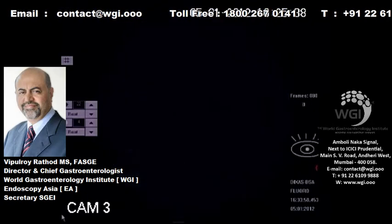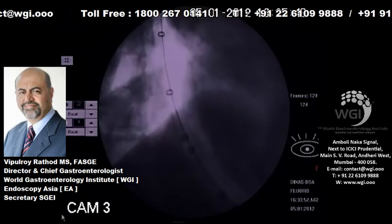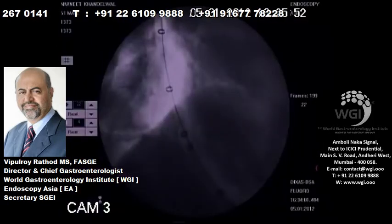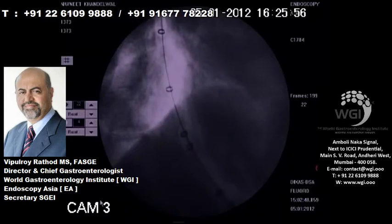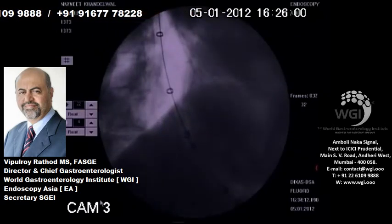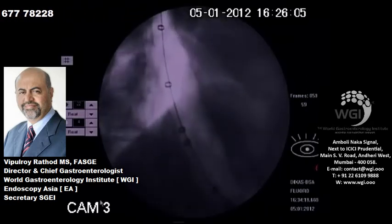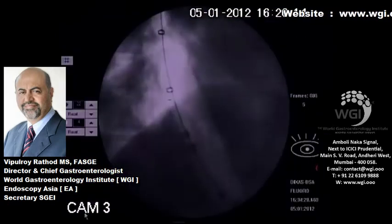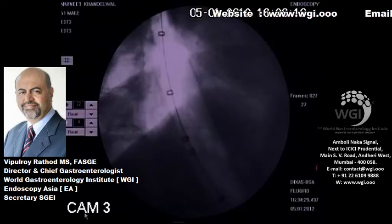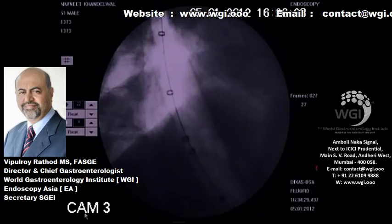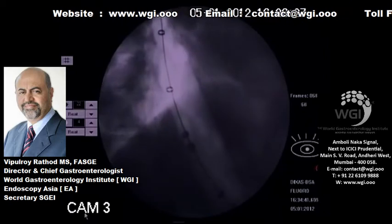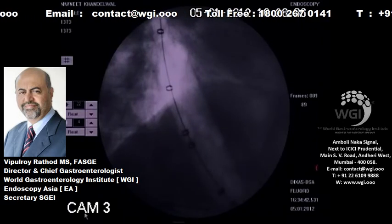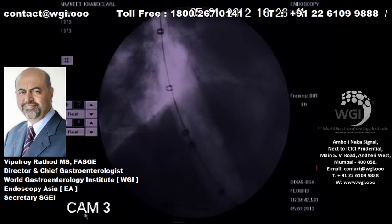Now at this stage we will deflate the balloon — you will see the air going out and the decompression occurring. We will re-inflate again to see how easily it opens up. As you can see, we are re-inflating the balloon and it opens up easily, which tells us that the LES has opened up fairly well. The balloon opens easily, so we will get one more dilatation up to 10 PSI, and the balloon opens up fairly easily without any resistance, signifying a fairly decent dilatation.